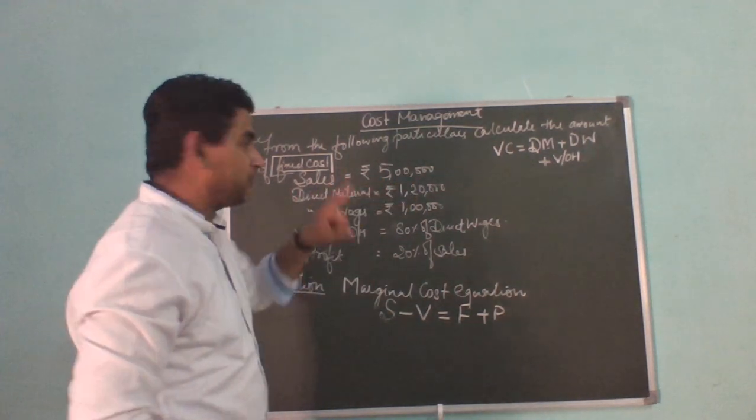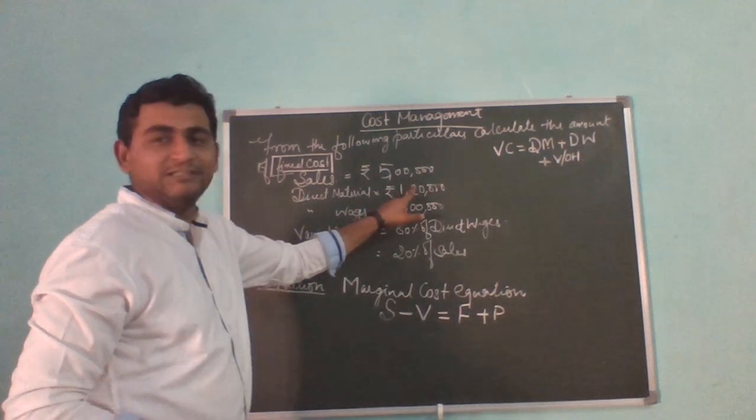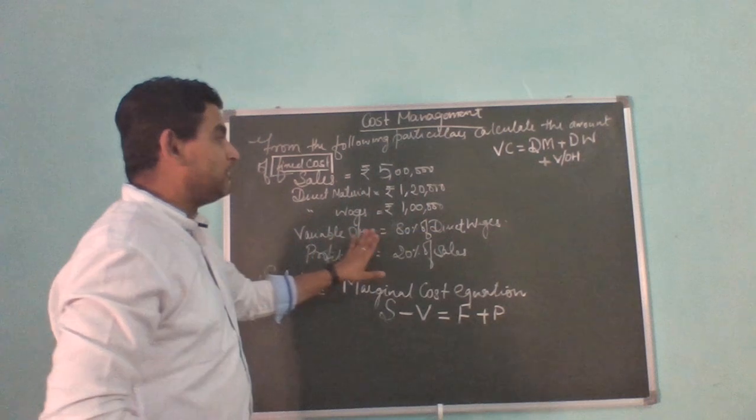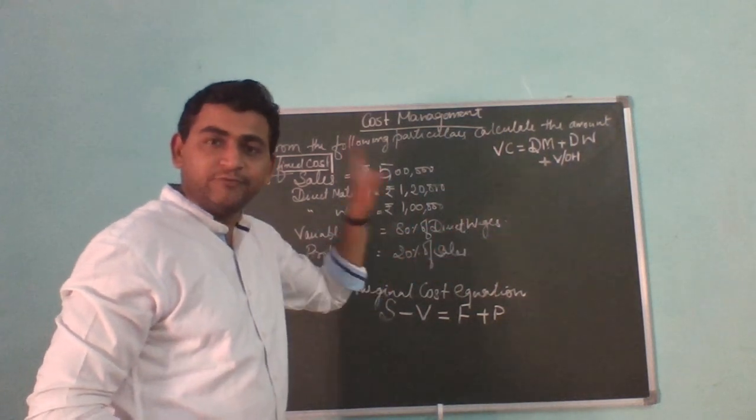Sales: rupees 5 lakh. Direct material: rupees 1 lakh 20,000. Direct wages: rupees 1 lakh. Variable overheads: 80% of direct wages.